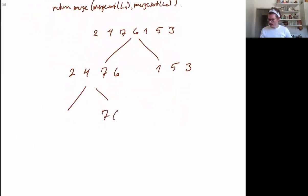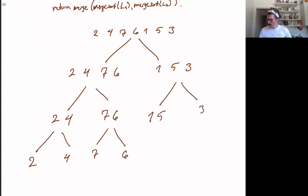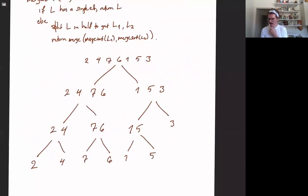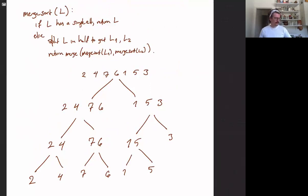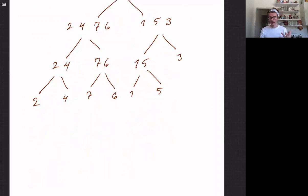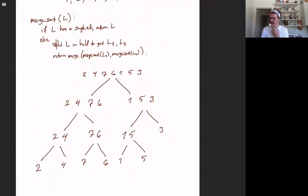We continue splitting in half until we get down to single elements. In a recursive algorithm, we have a forward or downward step when we are recursing, and then an upwards or backwards step when our recursions are returning. This is the forward step. Now we have our list split into a bunch of tiny lists, and we are going to combine them with a merge at each stage.